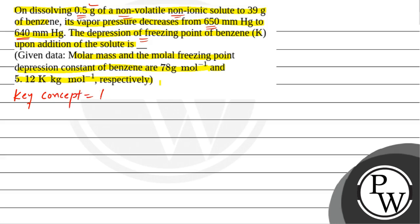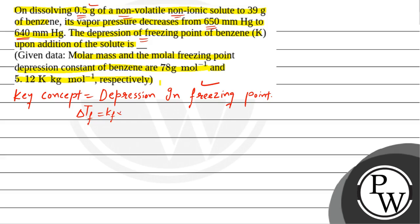The key concept here is depression in freezing point. This is a colligative property — it depends on the number of solute particles. When we add a non-volatile solute to a pure solvent, the freezing point of the solvent decreases. We call this depression in freezing point: ΔTf = Kf × m, where Kf is the molar freezing point depression constant and m is the molality.